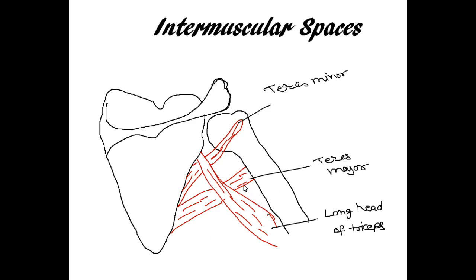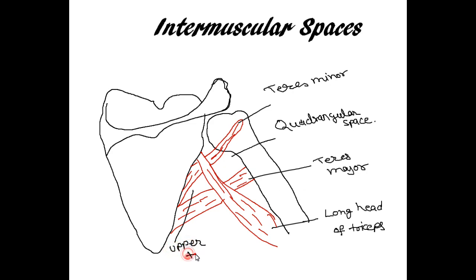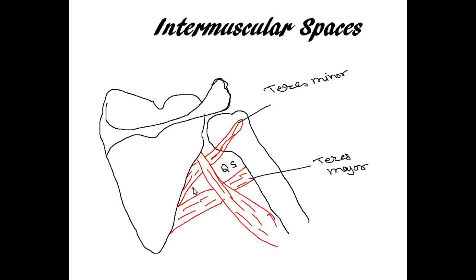We have three spaces in the upper part. The lateral side is known as the quadrangular space because of its shape. Then we have the upper triangular space and one space below that is known as the lower triangular space. On the lateral side we have the surgical neck of the humerus in the upper part.